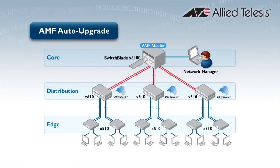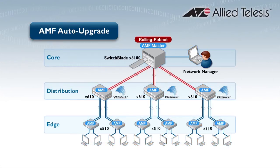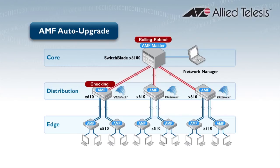Then, with a single command, a rolling reboot process is kicked off, which works through all chosen switches one at a time. Each switch will look for the most compatible release file. They all know which release file is suitable for them. The switch then performs several checks, including checking there is enough space on the flash on the upgrading unit. The new release file is copied to the flash on the device, and the boot image settings will be changed.